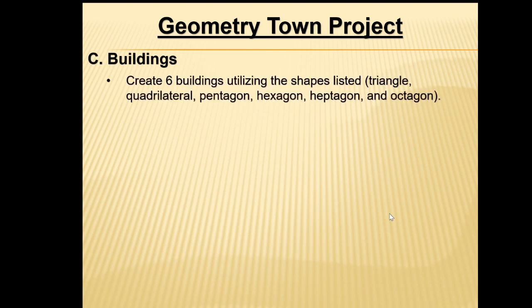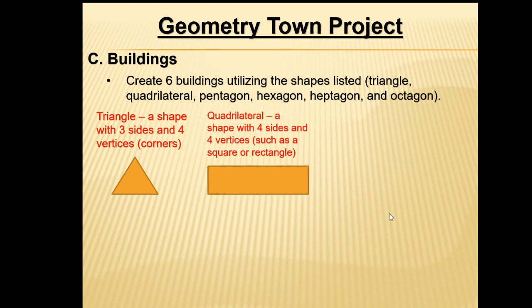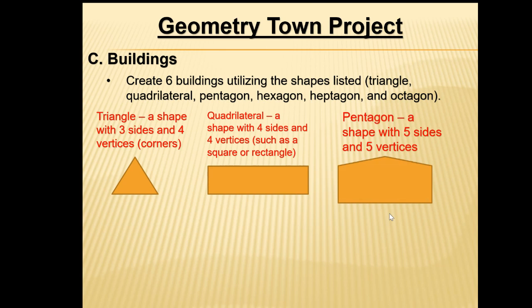Now for our buildings: you want to create six buildings utilizing the shapes listed. Those shapes are triangles, quadrilaterals, pentagons, hexagons, heptagons, and octagons. A triangle is a shape with three sides and three vertices. A quadrilateral is a shape with four sides and four vertices, such as a square, rectangle, or rhombus — or any four-sided shape even without a specific name. A pentagon is a shape with five sides and five vertices.